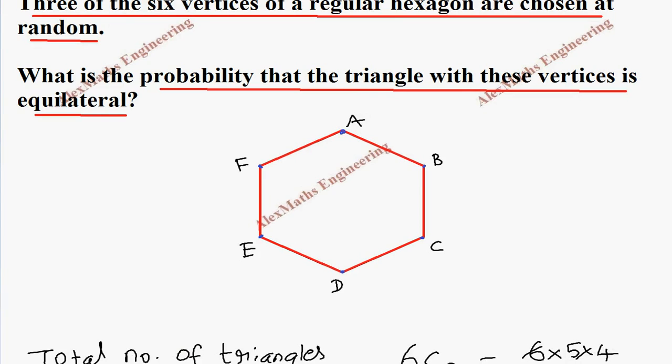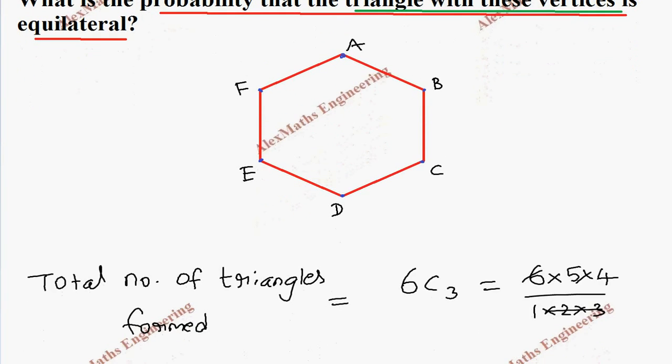Now, the question they are asking, what is the probability that the triangle with these vertices is equilateral. So when we are looking for a triangle which is equilateral, the points chosen should be A, E, C. If I join this, we get an equilateral triangle like this.